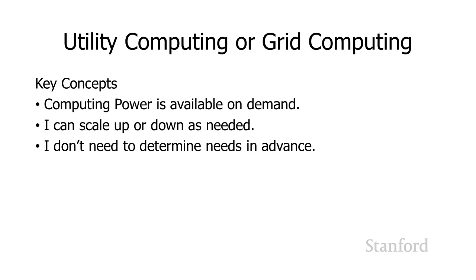The idea behind grid or utility computing is the exact same thing, except for computing power. Computing power is available on demand. I can scale up or scale down as I need. If we're running a bunch of simulations in February and need more computing power, we don't need to notify anybody — we just plug in and that computing power is there. Once we're done in mid-March, we don't tell anybody, we just stop using it and stop paying for it, the same way when I stop running my space heaters, I stop paying for the electricity.